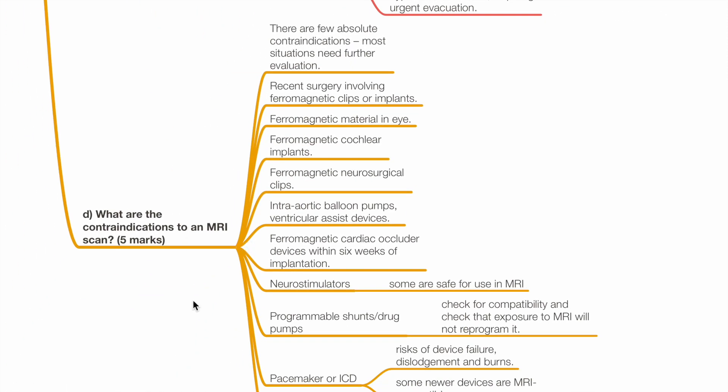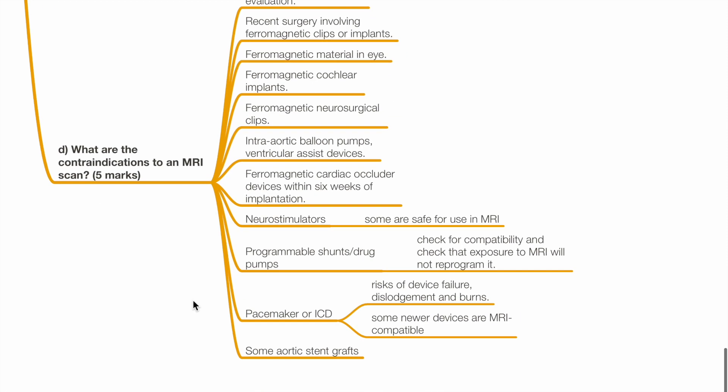Part D: What are the contraindications to an MRI scan? Contraindications include recent surgery involving ferromagnetic clips or implants, ferromagnetic material in the eye, ferromagnetic cochlear implants, neurosurgical clips, intra-aortic balloon pumps, ventricular assist devices, and ferromagnetic cardiac occluder devices within 6 weeks of implantation.